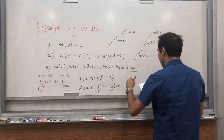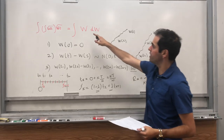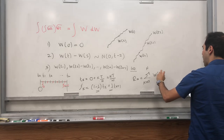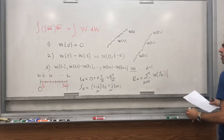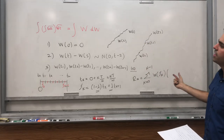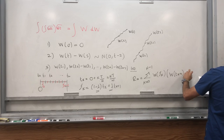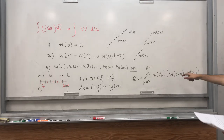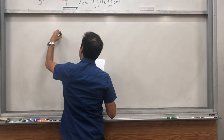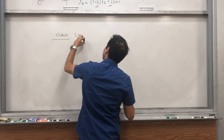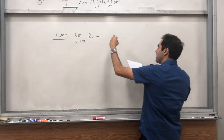Then consider the Riemann sums. R_n is the sum from 0 to n-1 of: we're integrating the function w, so you evaluate w at the point τ_k, times — now, usually you do dt, so t_{k+1} minus t_k, but because your increments are dw — you do w_{t_{k+1}} minus w_{t_k}. So that is your analog of the Riemann sum. And the question is: what does that converge to? It turns out — claim — and this is super interesting.